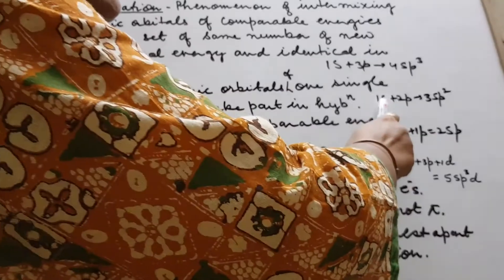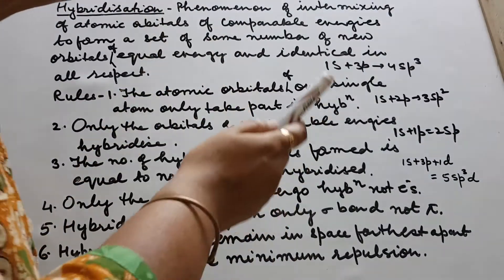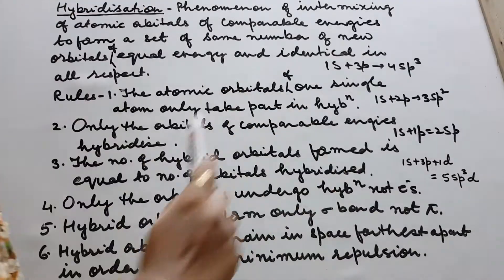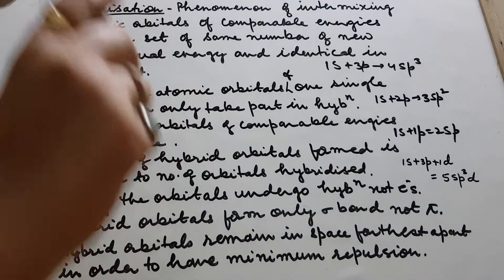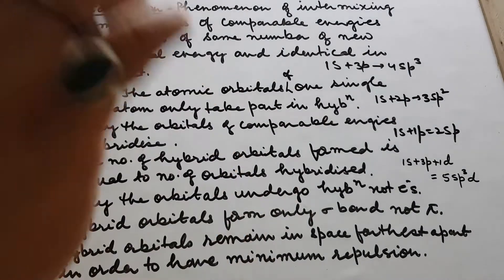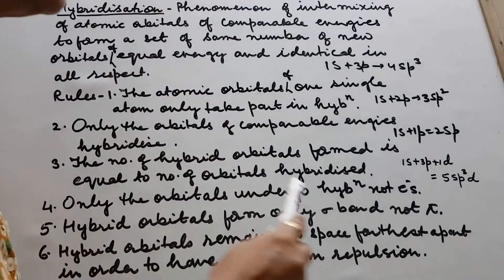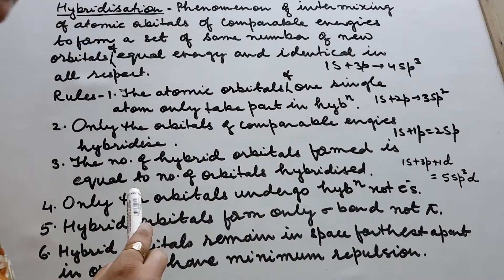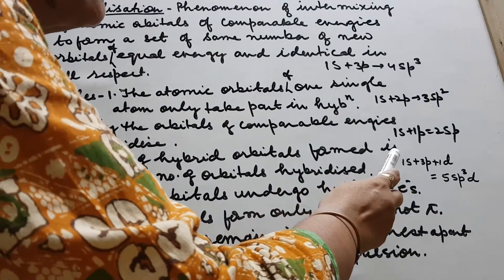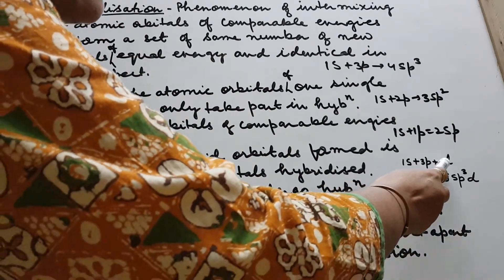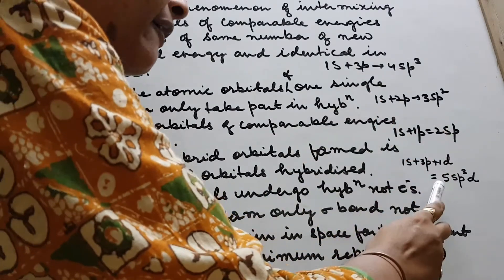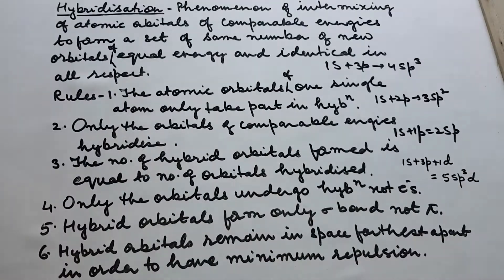Similarly, if 1s and 2p combine — means three are combining — they will give rise to three sp2 orbitals, having exactly same energy and identical in all respects. If 1s and 3p combine, they will give rise to four sp3 hybrid orbitals. If 1s and 1d combine — 1 plus 3 plus 1 equals 5 — they will give rise to five sp3d hybrid orbitals.